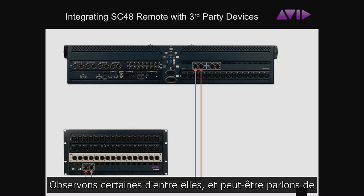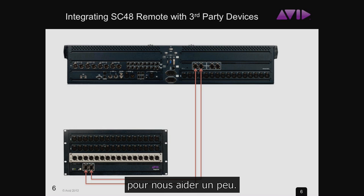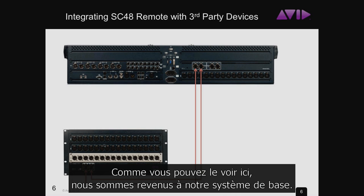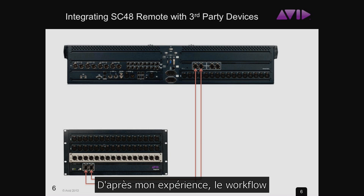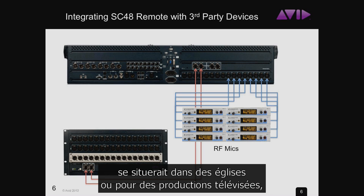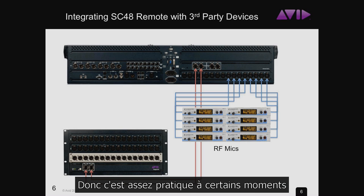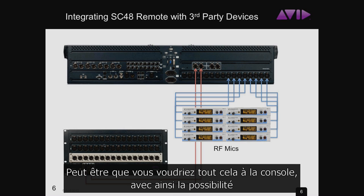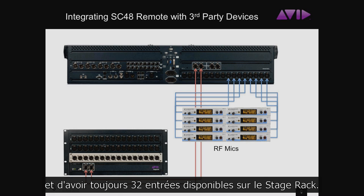Let's look at integrating the SC48 Remote with some third-party devices. Going back to our basic package — 32 inputs remote, 16 outputs remote, 16 mic line inputs at the console with the IO16 card installed. The workflow I've seen that would most require this setup is in churches or TV production — places where you might be mixing front of house and monitors from the same location, keeping all your RF wireless receivers right next to you at the console while still having 32 inputs on stage.